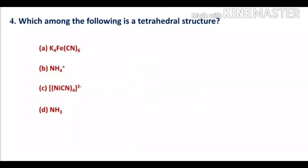Option C, Ni(CN)4 2−, has square planar geometry with DSP2 hybridization. Option D, NH3, is a trigonal pyramidal structure since it has three bond pairs and one lone pair. So the correct option is B.